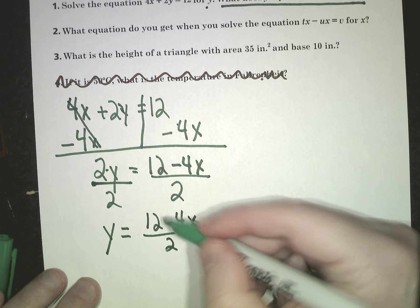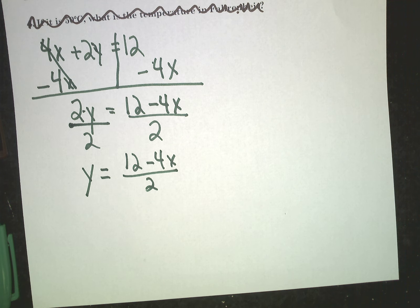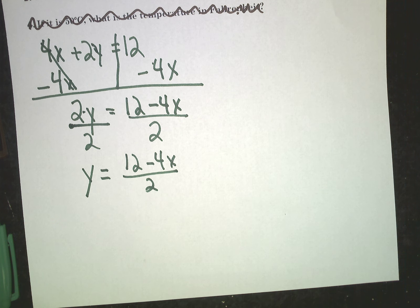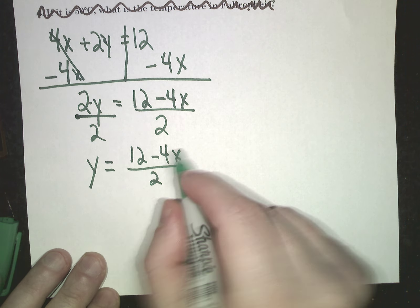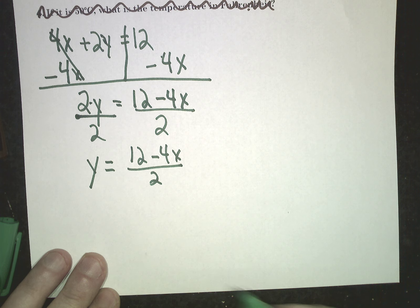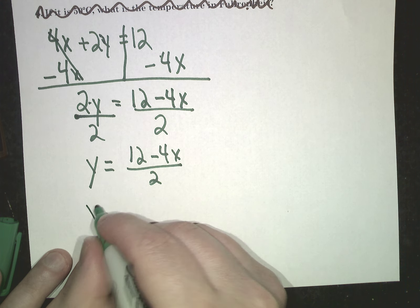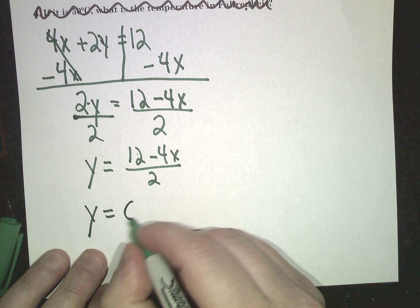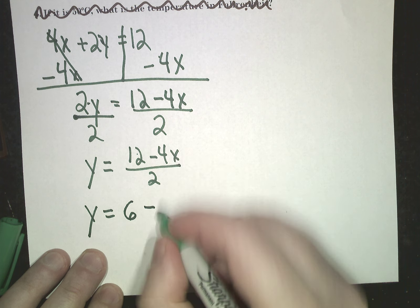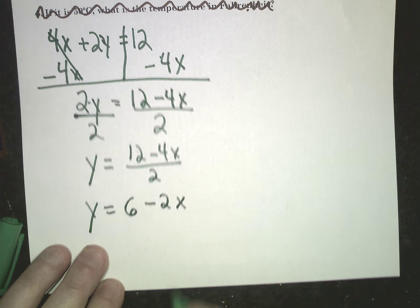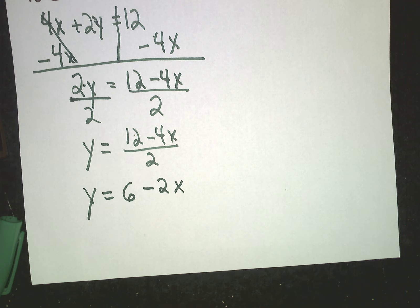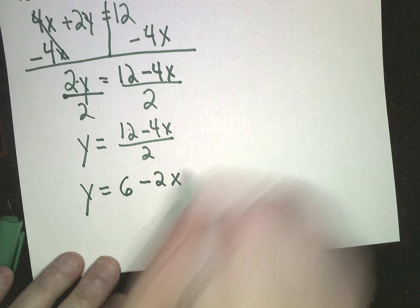Now, what I like about this is both of these numbers, 12 and 4, are divisible by 2. So you could simplify that. I'm going to go ahead and do it — otherwise you can leave it as written and just plug in the x's. 12 divided by 2 is 6, minus 4 divided by 2 is 2. Bring down the x. You can leave it either way — either one is fine.